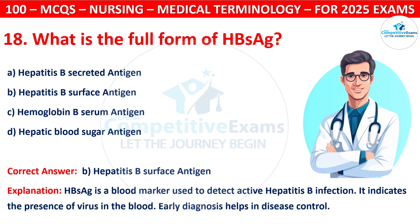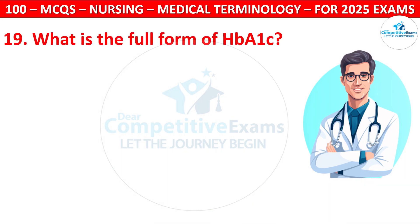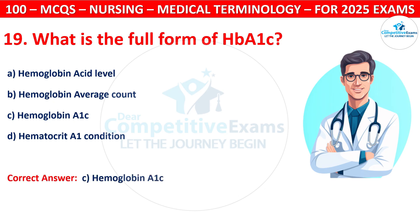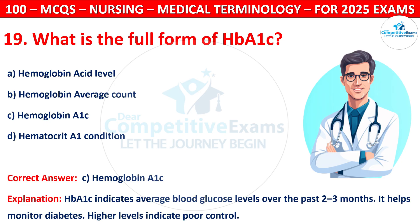Question 19: What is the full form of HbA1c? Options are: Hemoglobin Acid Level, Hemoglobin Average Count, Hemoglobin A1c, or Hematocrit A1 Condition. The correct answer is C, that is Hemoglobin A1c. HbA1c indicates average blood glucose level over the past 2–3 months. It helps monitor diabetes. Higher levels indicate poor glycemic control.